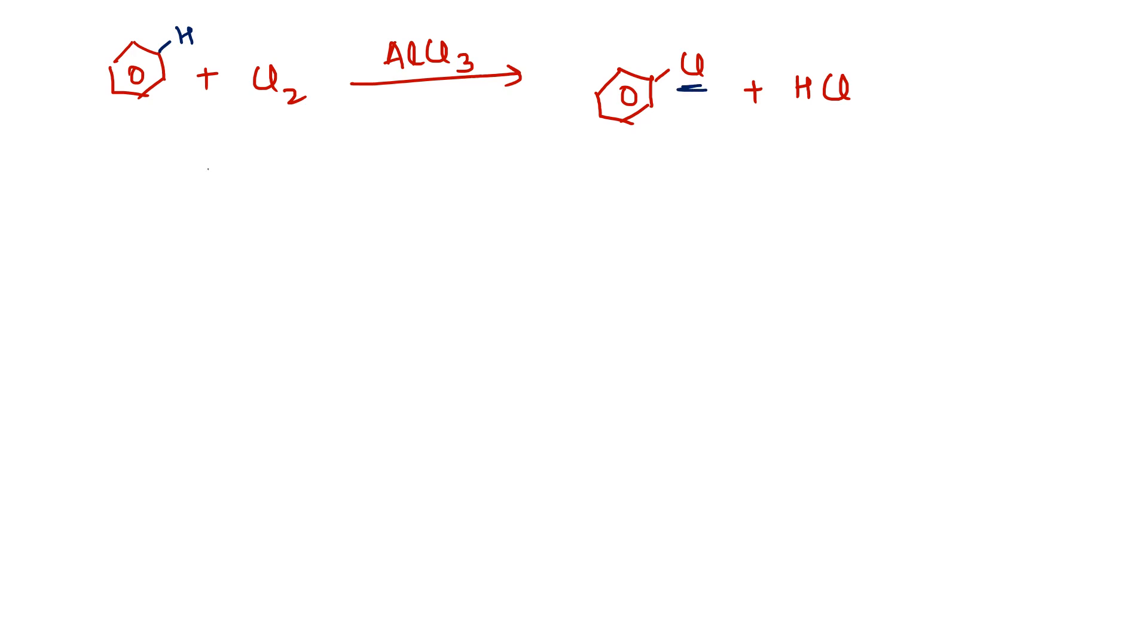The mechanism for this reaction is AlCl3 being a Lewis acid reacts with Cl2 to form AlCl4 negative plus Cl positive.